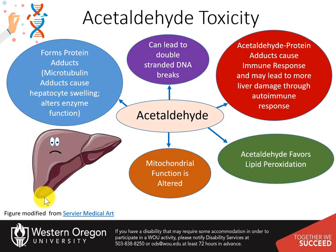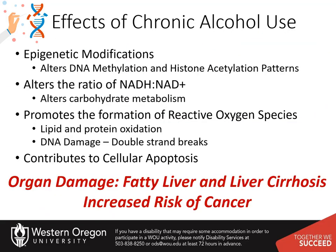Overall, the liver is stressed and unhappy when too much ethanol is consumed. Heavy chronic drinking can also lead to epigenetic modifications that alter protein expression patterns within the cell. Due to the oxidation of alcohol to acetate, the metabolism of alcohol leads to an increase in the NADH to NAD+ ratio, altering carbohydrate metabolism. Heavy ethanol consumption promotes the formation of reactive oxygen species and can also promote apoptosis.